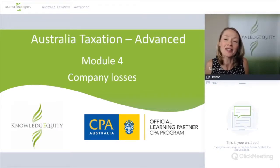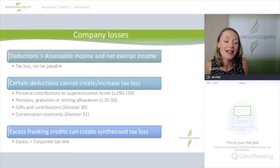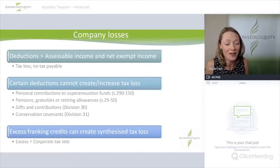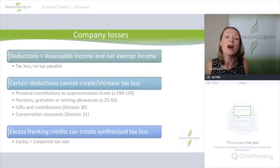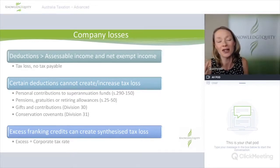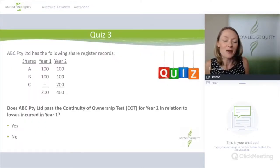Now let's look at company losses — what happens if instead of taxable income you get a tax loss, where deductions are greater than assessable income and net exempt income. Obviously there's no tax payable, and certain deductions cannot create or increase a tax loss. If you have excess franking credits — say tax payable is $100 but franking credit tax offsets are $120 — that $20 excess is not refundable to the company but can be converted into a loss by dividing by the company's tax rate of either 30% or 27.5%.